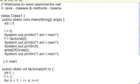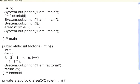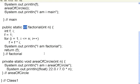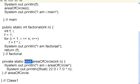Now, every method returns something. This method does not return anything, so it is termed as void. The factorial program takes in a parameter integer and returns an integer. Area of circle takes an integer as a parameter and returns nothing.